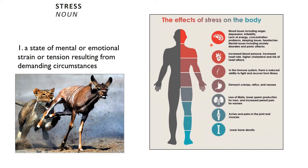The effects of chronic stress include impacts on the brain — mood issues, changes in energy, lack of concentration, sleep issues — and in worse scenarios, anxiety disorders and panic attacks. Physiologically, stress affects blood pressure, changes in the immune system and recovery from illness, gastrointestinal disorders, loss of libido, lower sperm production in men, changes in periods for women, aches and pains in joints and muscles, and it can even affect bone density. The effects of chronic stress are significant and severe.